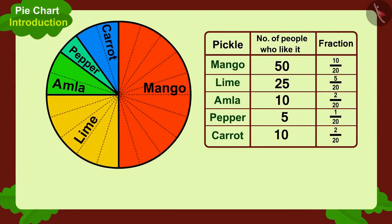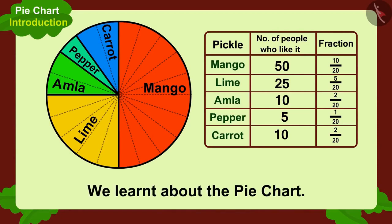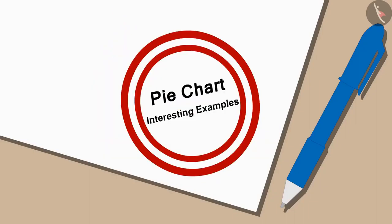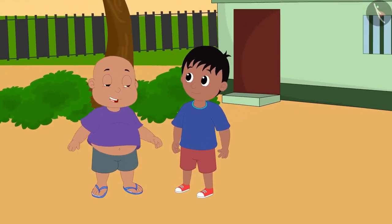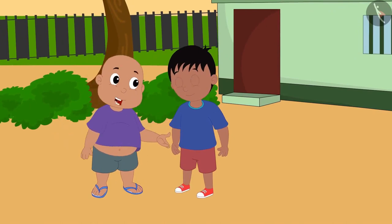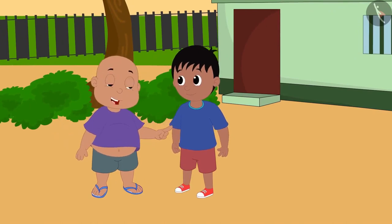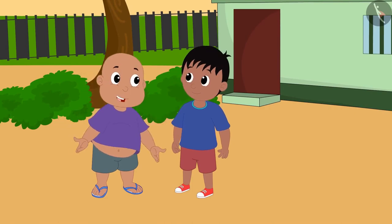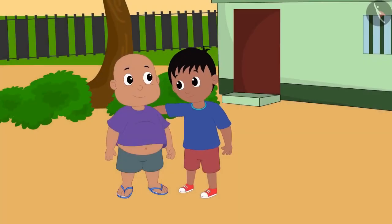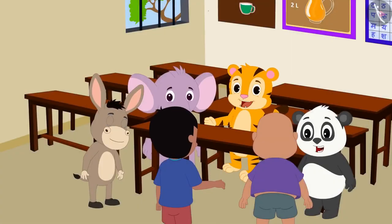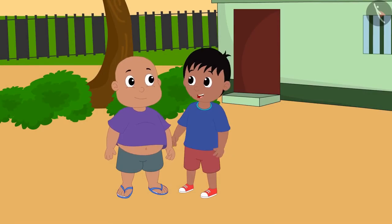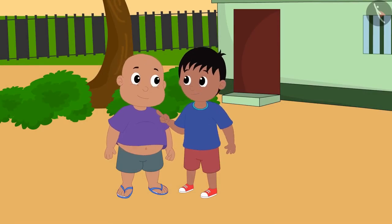Hello children. In the last video we learned about the pie chart. In this video, we will learn more about it through some interesting examples. Raju, Mrs. Khan has told me that all the children have to wear the same color shirt for the school's annual festival. She has asked me to find out which color is most liked by the children. Come, I will help you. We will ask all the children to choose the color they like, then we will make a chart of this information and find out which color is most liked.